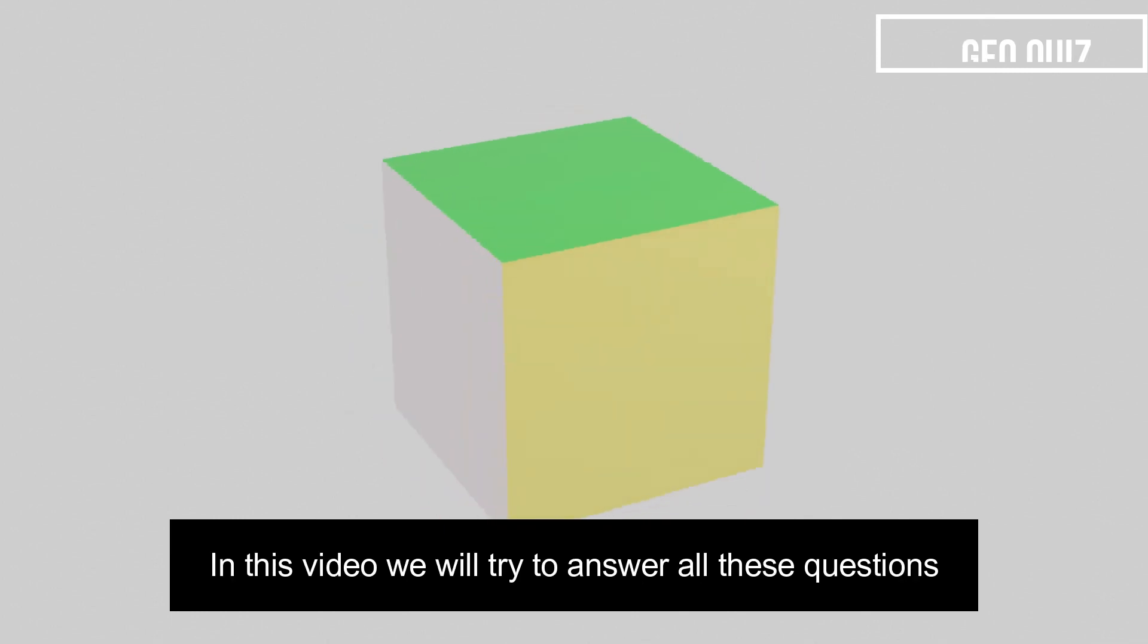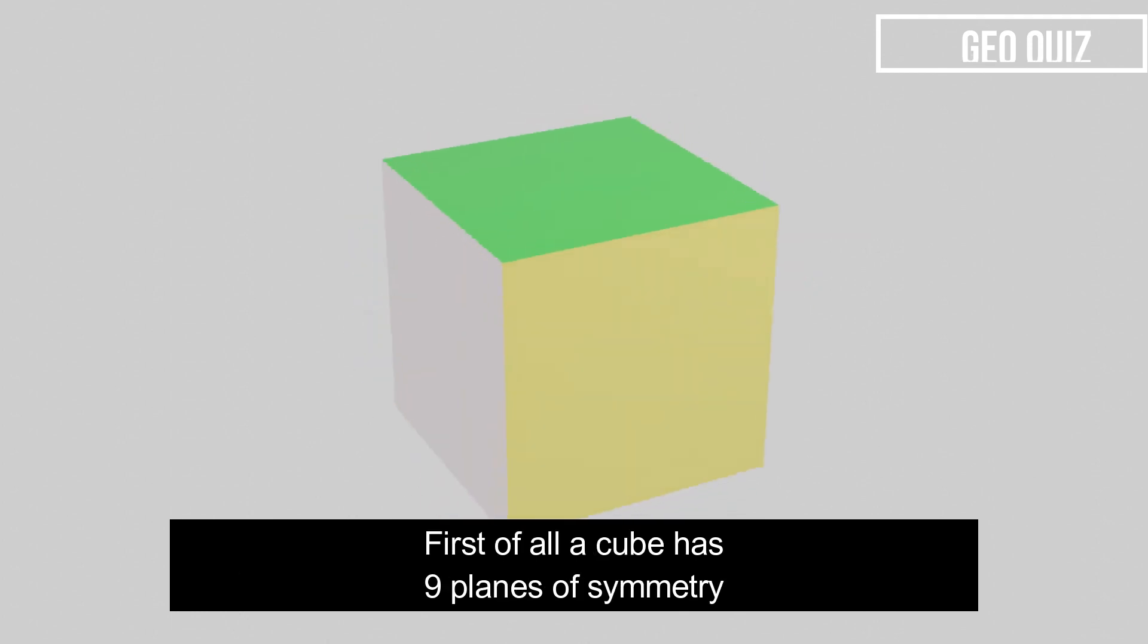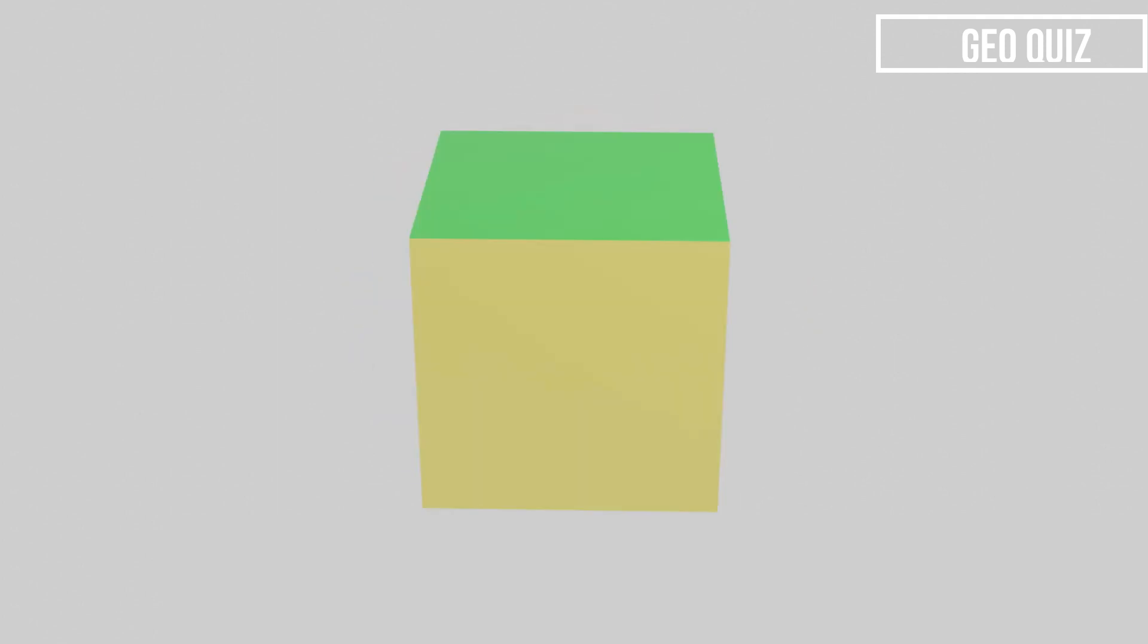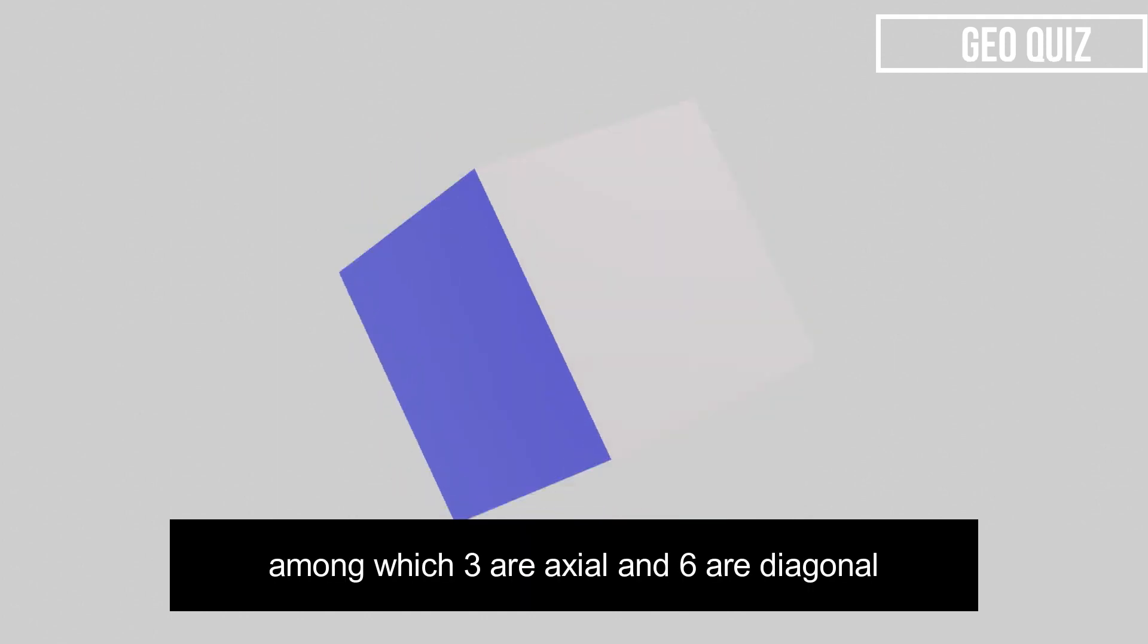Now, in this video, we will try to answer all these questions. So, first of all, a cube has 9 planes of symmetry among which 3 are axial and 6 are diagonal.